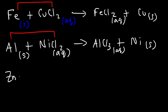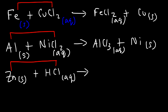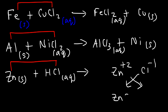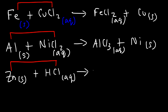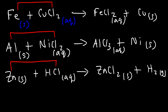If zinc metal reacts with hydrochloric acid, zinc pairs up with chlorine. Zinc has a +2 charge and chloride has a -1 charge, giving ZnCl₂. Zinc displaces hydrogen out of the solution, producing elemental hydrogen gas. Whenever you have an active metal reacting with an acid, hydrogen gas will be produced.